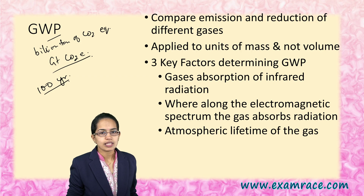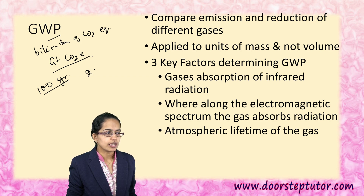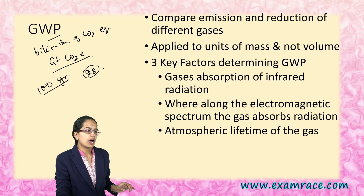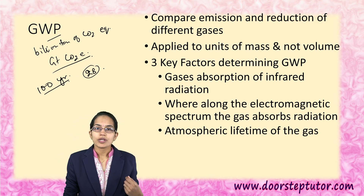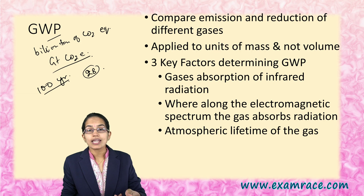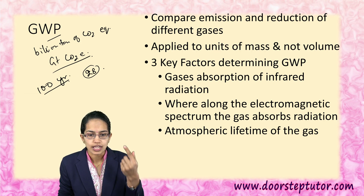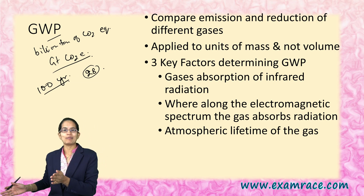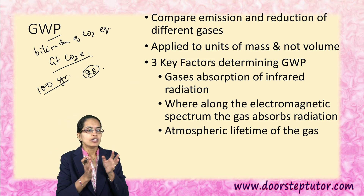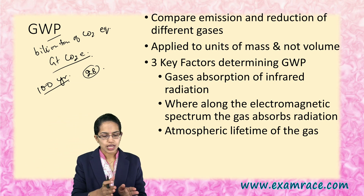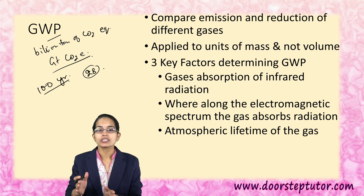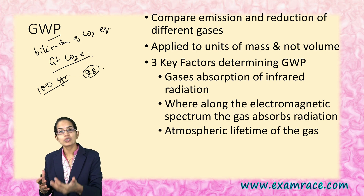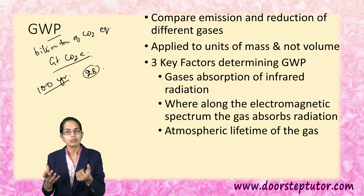So let's say for methane, it turns out to be 28 as per the recent reports. When I say it turns out to be 28, that means methane has 28 times more global warming potential as compared to carbon dioxide. So it explains which gas is able to trap the greenhouse effect more.